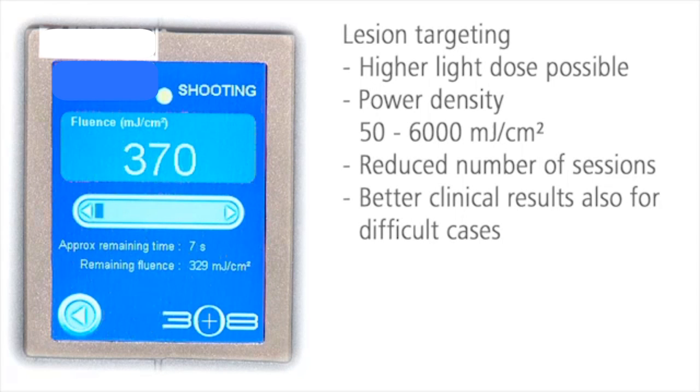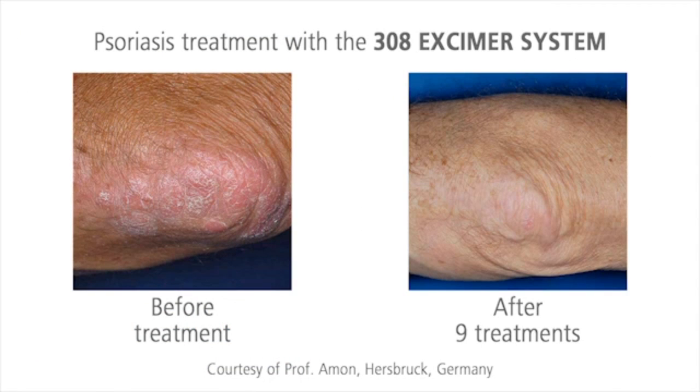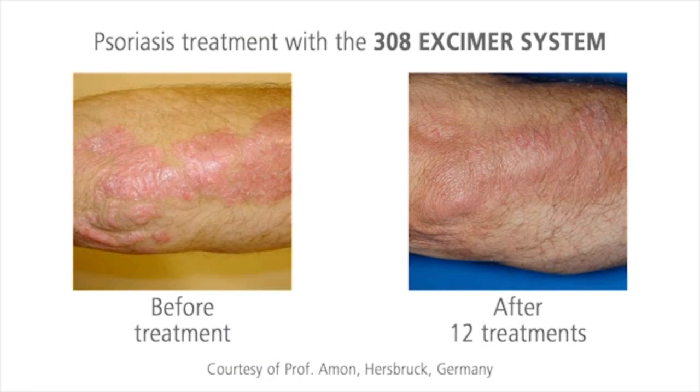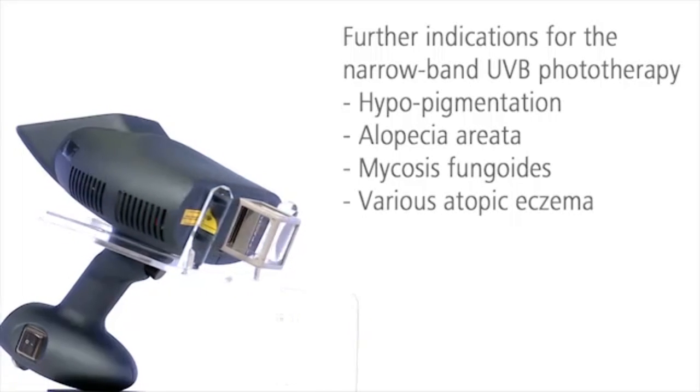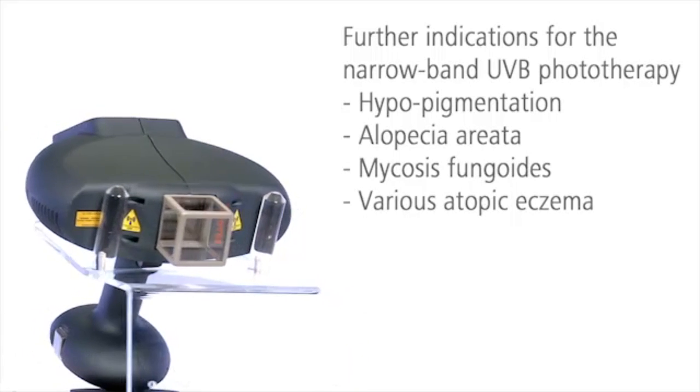Even for difficult cases, after only eight sessions, persistent psoriasis plaques are visibly reduced or may have even vanished completely. The 308 Excimer System also gives you good results for vitiligo. Many other indications respond well to the narrow band UVB phototherapy.